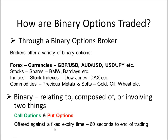Binary options are offered against a fixed expiry time, such as 60 seconds or more. For example, if we thought the Australian dollar against the US dollar was going to increase in price in the next 60 seconds, we would place a call option. And after 60 seconds, if the price is higher than the start of that 60 seconds, we would profit a pre-agreed amount with our broker.